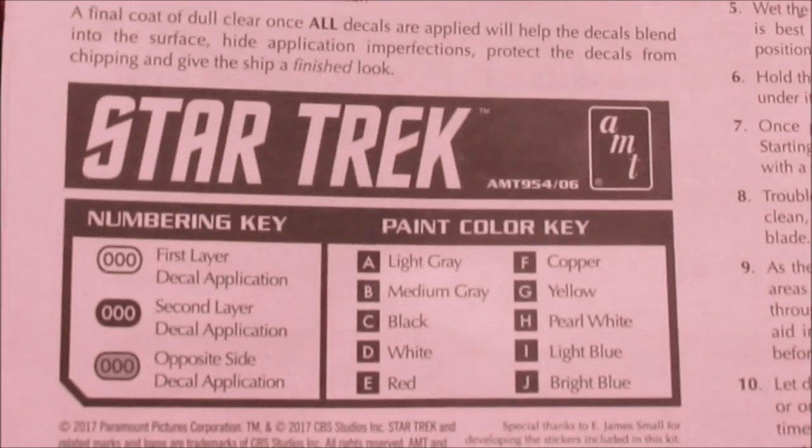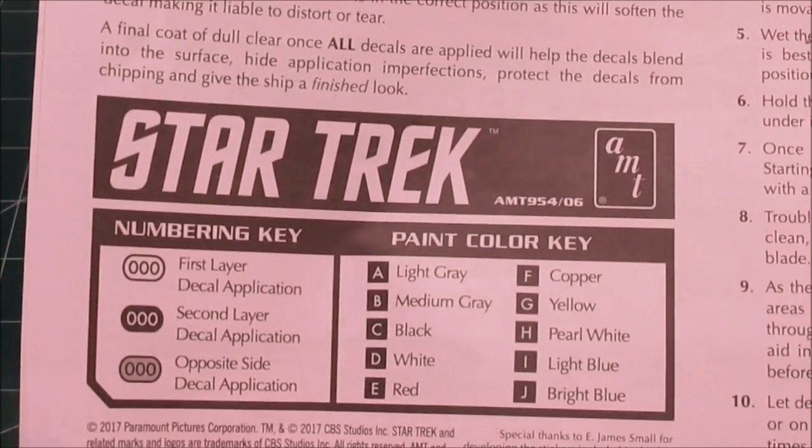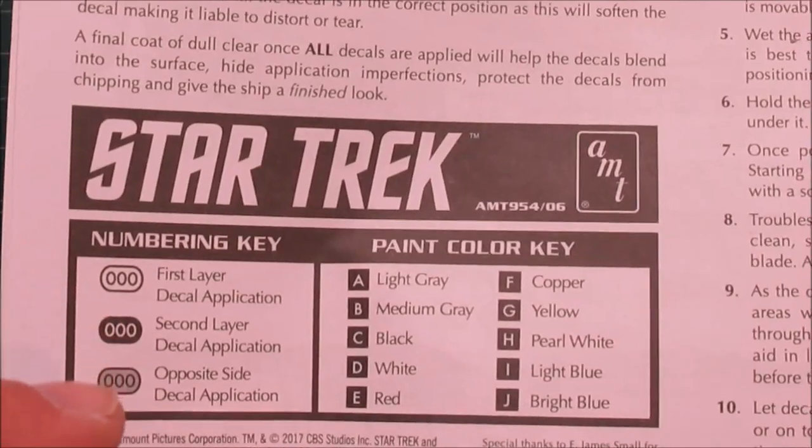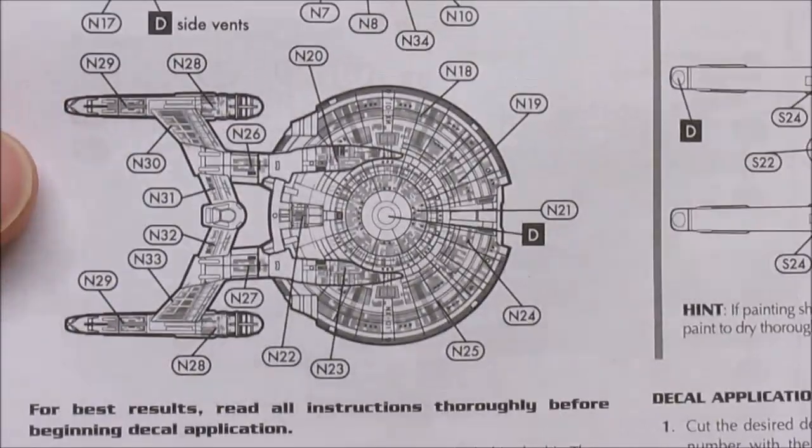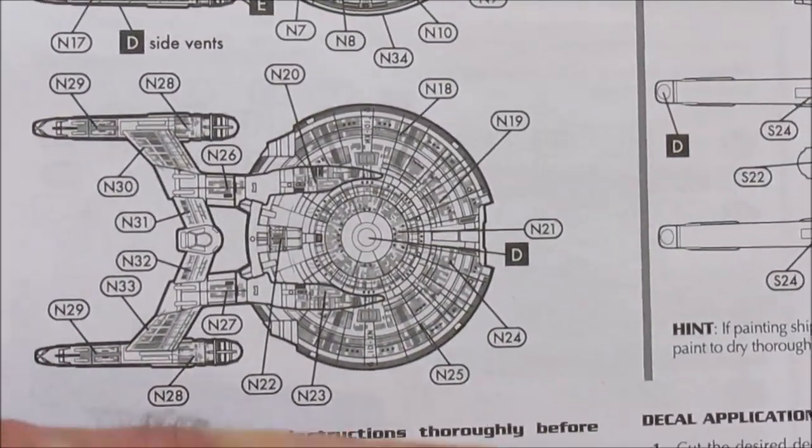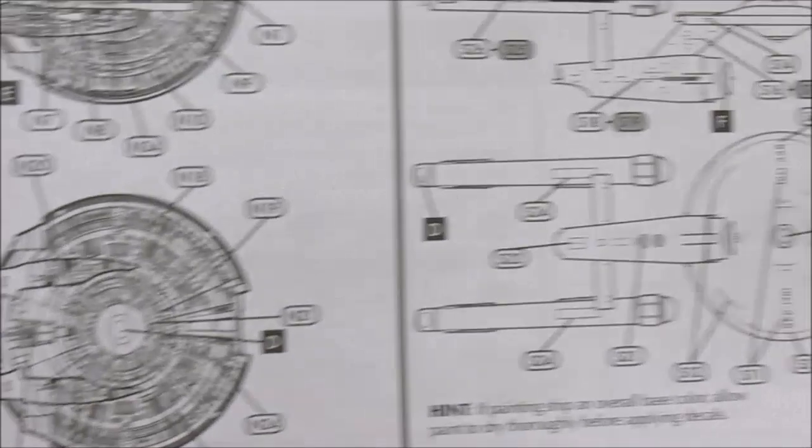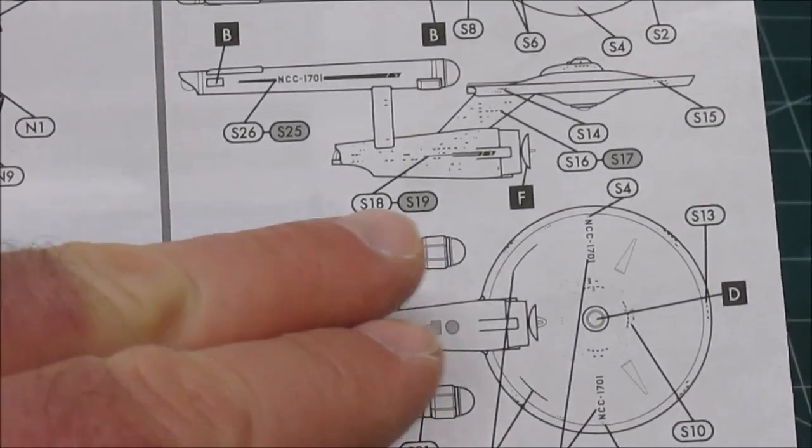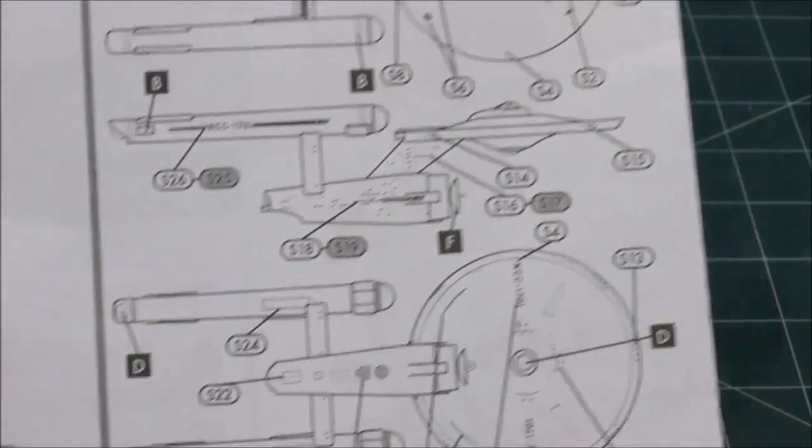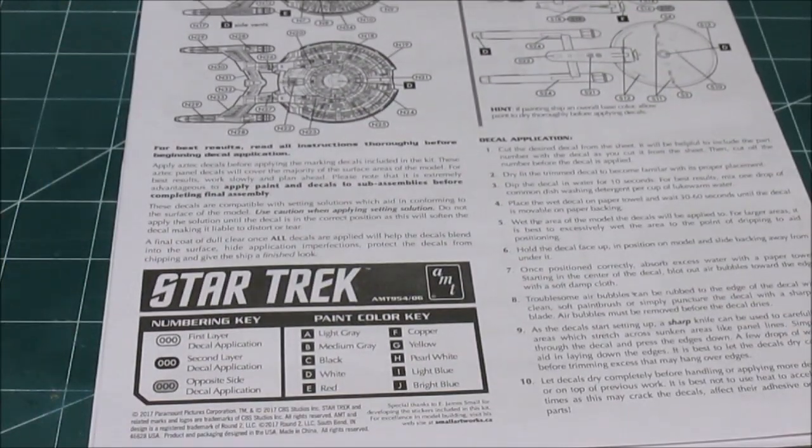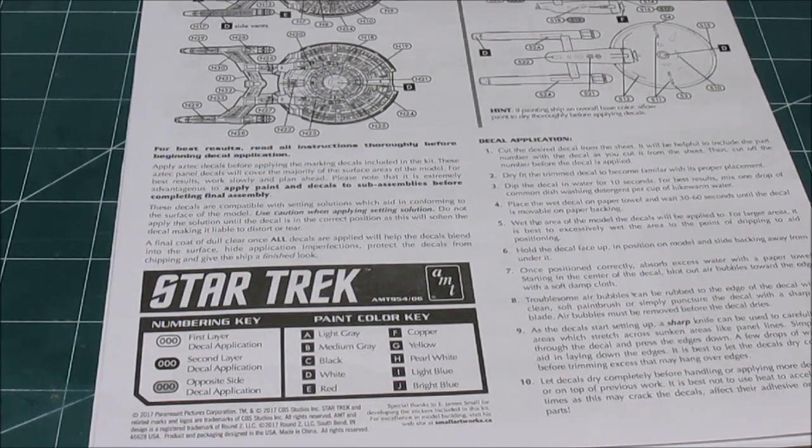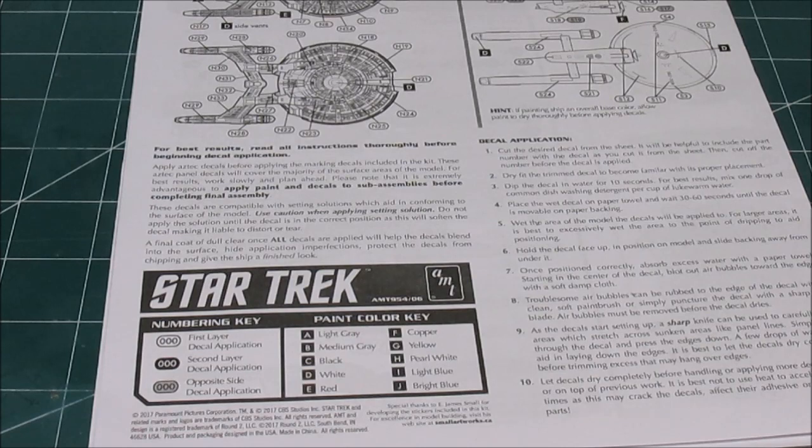Before I leave you, I did want to show you in the instruction sheet just so you know what is there. There is a numbering key for the decals letting you know first, second, opposite side, and then a paint chart. So when you look at the assembly you'll know exactly what colors to use, exactly where to place the decals. If we go over here you can see it's got top side, reverse side, which decals to apply first. It's a very common sense method and I wanted you to know that's going to be in there to make the assembly and the decaling go really smooth for you on all seven ships.